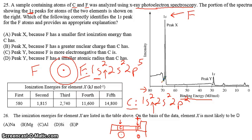So peak X, then we should pick peak X, except let's pick the right explanation. Because fluorine has a smaller first ionization energy than C has, or peak X because F has a higher nuclear charge than C has. And again, nuclear charge is what you want to pick, effective nuclear charge.